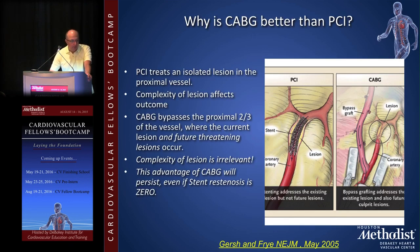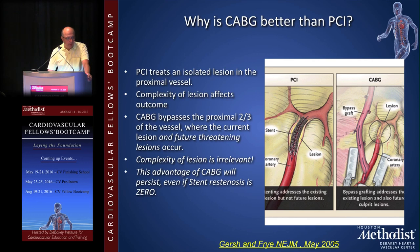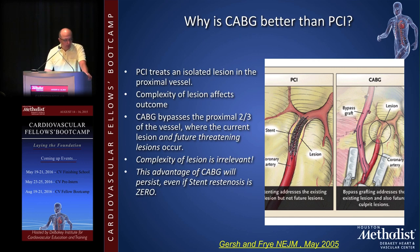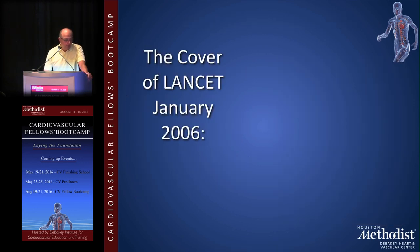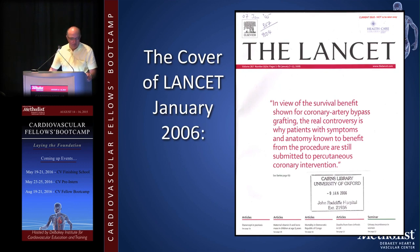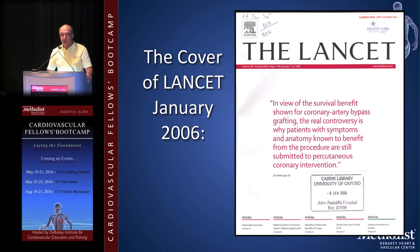Why is CABG better than PCI? PCI treats an isolated lesion in the proximal vessel, and the complexity of that lesion affects the outcome. CABG bypasses the proximal two-thirds of the vessels — not just the segment with the current lesion but also the segment where future threatening lesions can occur. So lesion complexity is irrelevant to the success of CABG, and this advantage will persist even if stent restenosis reaches zero. The cover of the Lancet in January 2006 stated: 'In view of the survival benefits shown for coronary artery bypass grafting, the real controversy is why patients with anatomy known to benefit are still subjected to PCI.'